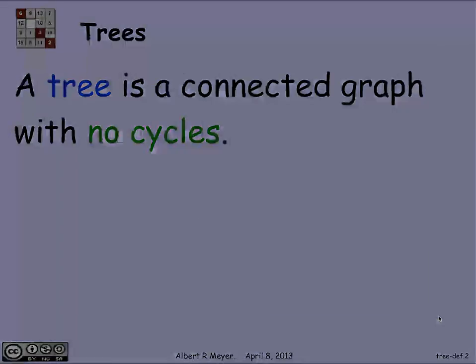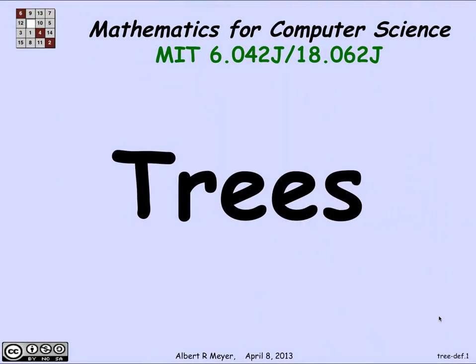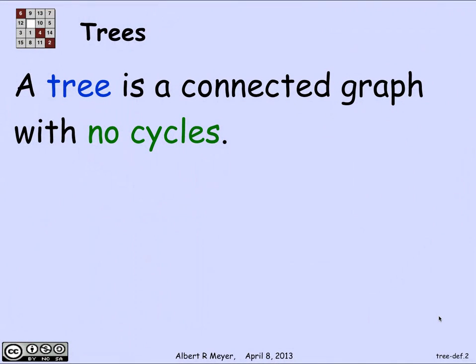Trees are about the most basic data structure that you're ever going to come across. They pervade computer science and other subjects. The simplest definition of a tree is that a tree is a connected graph with no cycles. In this setting, we're talking about simple graphs and trees with undirected edges.